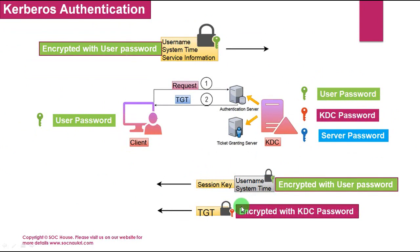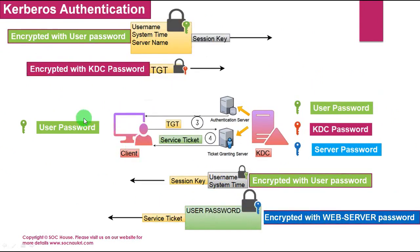The TGT is valid for some hours. If it expires, the client will submit a new request to the Authentication Server to get a new TGT ticket. Next, the client sends the session key and TGT ticket to the Ticket Granting Server. The session key consists of the username, system time, and server name, encrypted with the user password. The TGT ticket is the same ticket received in the previous step.